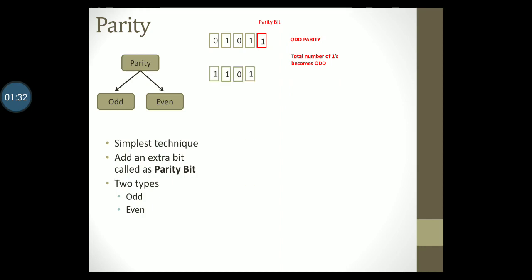Supposing we have four data bits 1 1 0 1. For odd parity, the parity bit is set so that the total number of ones in the codeword becomes odd.